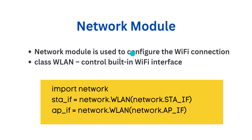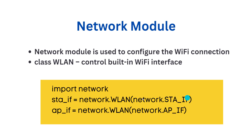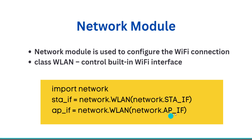The Network Module contains a class called WLAN, which controls the built-in Wi-Fi interface of ESP32. To use the Network Module, we have to import network. To make it a station, we use network.WLAN and pass network.STA_IF for Station mode. network.AP_IF is for Access Point mode.